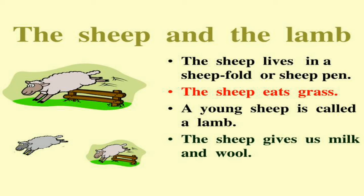So children, you all understand that a baby sheep is called a lamb. The sheep eats grass and is a herbivorous animal — it eats leaves and grass.